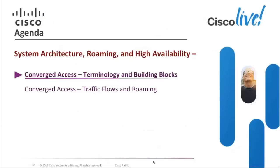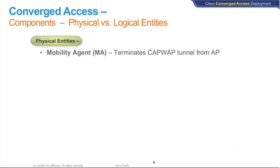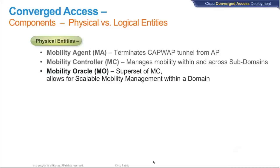Now let's look at the same example with the 3850. When you deploy the 3850, let me first take you through the new building blocks. There are physical and logical entities. The first physical entity is Mobility Agent, where the CAPWAP tunnel terminates. Then we have Mobility Controller, which manages mobility within or across the subdomain, does RRM, WIPS, guest access, and access point licensing. With 3850, we've launched a new physical entity: Mobility Oracle, which is a superset of MC and allows scalable mobility management within a domain. Mobility Oracle is optional — it's not necessary in any wireless network with the 3850.